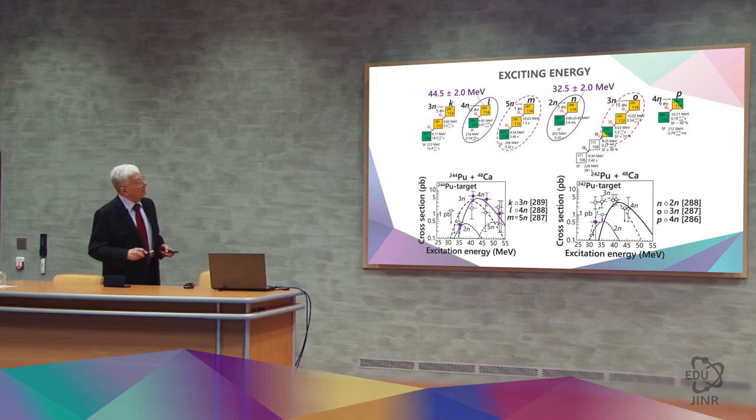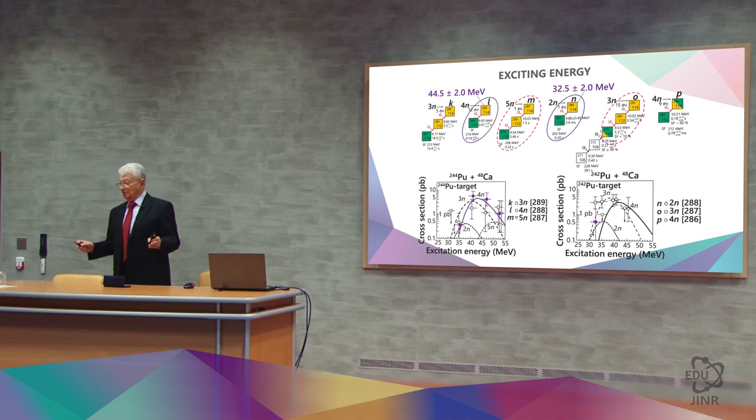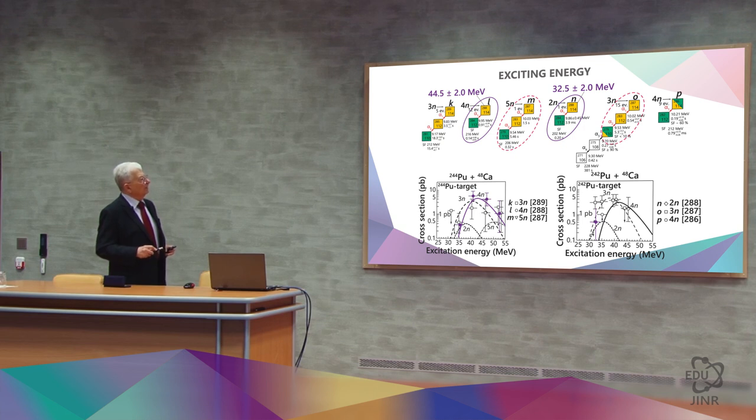Let's take a closer look and find out how else they are similar to one another. Well firstly, these are exactly the same chains. The energies of their decay are practically the same, diverging by only half a percent. But one was obtained with plutonium-244, and the other with plutonium-242.